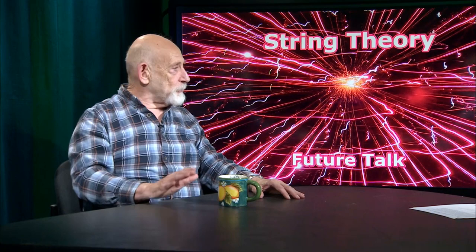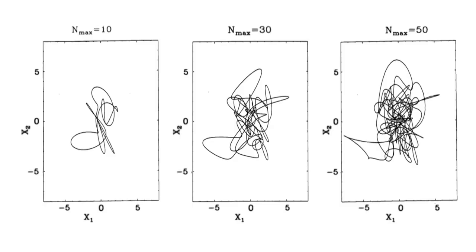We actually have some pictures of strings — a computer rendition. Can we see that graphic? Oh, there it is. I recognize it — I think I made it. What those are, actually, are very complicated strings. They're strings which have undergone a process of falling toward a black hole. The one on the left is a string after it's gotten close to a black hole.